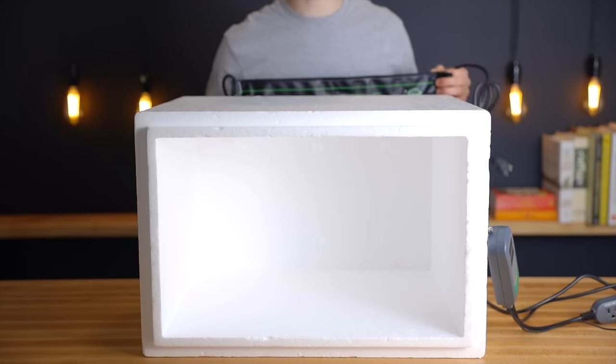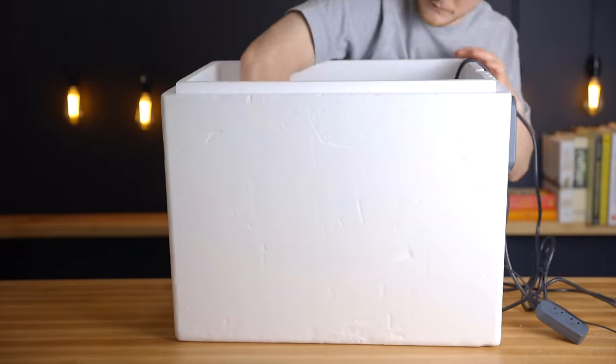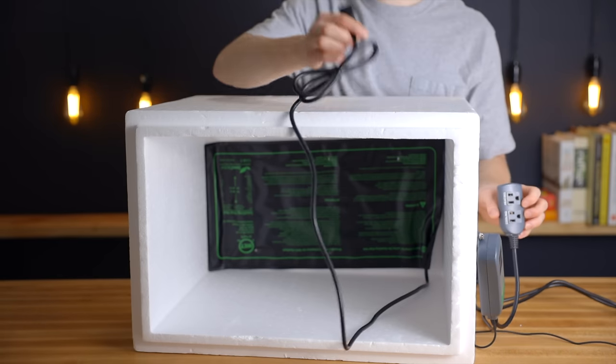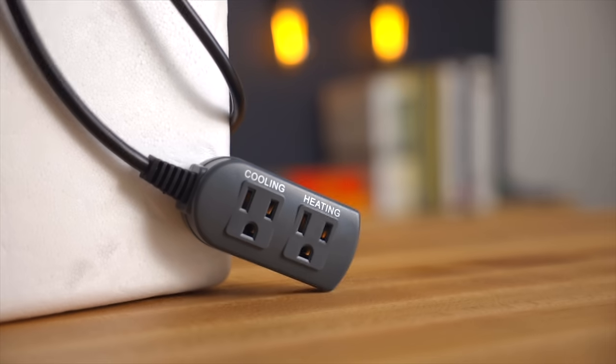So it's actually really simple to set up. You just place the seedling mat inside the box and as you can see this seedling mat fits perfectly for this box. Then you'll just want to plug in your seedling heating mat to the side of your temperature controller that says heating.